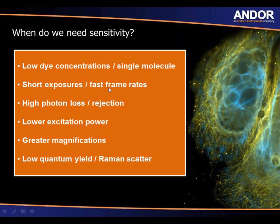When using lower excitation power — you don't want to kill your sample as soon as you put it on the stage of your microscope — if you want to look at live cell imaging, you don't want to use very high laser intensity. You want to use very low intensity so that your sample can be imaged for longer periods of time. Therefore, with lower excitation power, you're going to need a sensitive camera to pick up those low levels of emitted light.